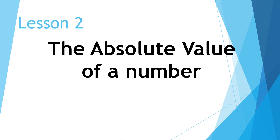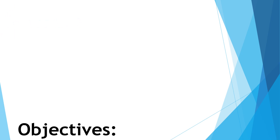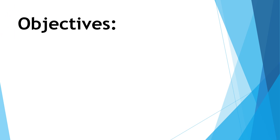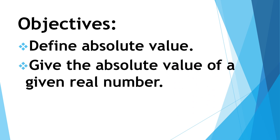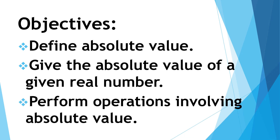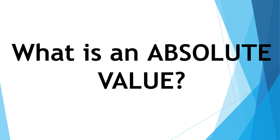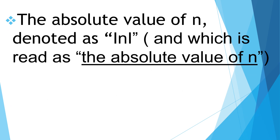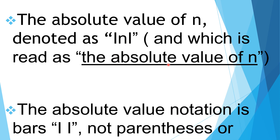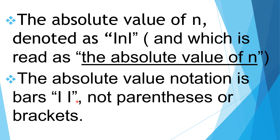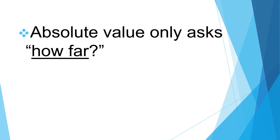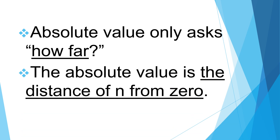Our next lesson is about the absolute value of a number. Our objectives for this lesson are: define absolute value, give the absolute value of a given real number, and perform operations involving absolute value. The absolute value of N, denoted as |N|, is read as the absolute value of N. The absolute value notation uses bars, not parentheses or brackets. Absolute value only asks how far — it is the distance of N from zero.